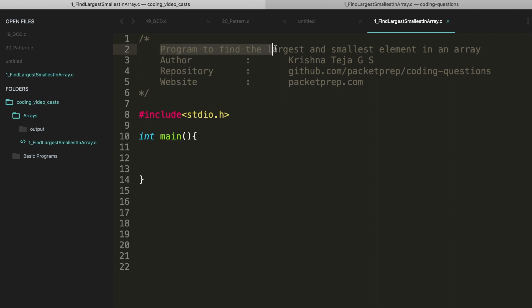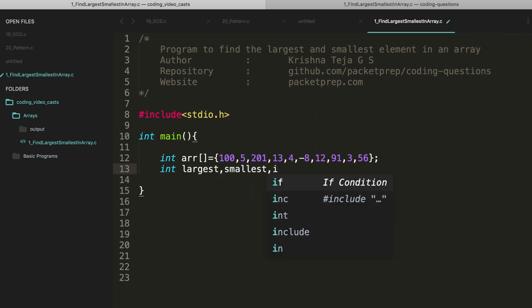Let's implement this program to find the largest and smallest element in an array. Let's take a sample array. Let me take a few more variables - one will be largest, then smallest, then I need i for the loop iteration.